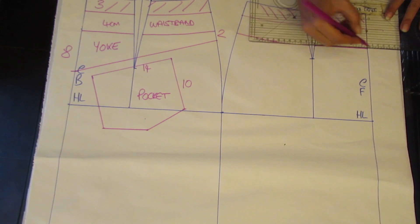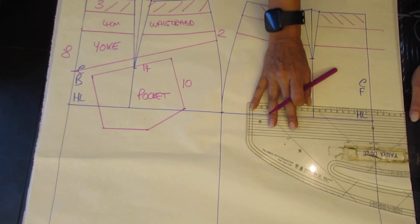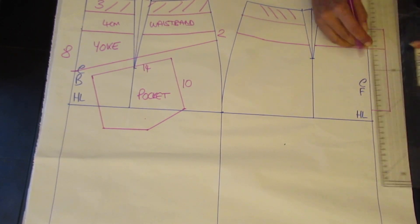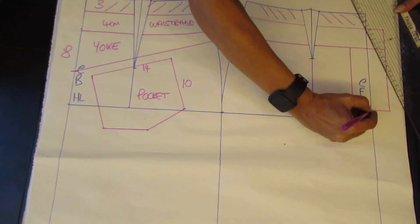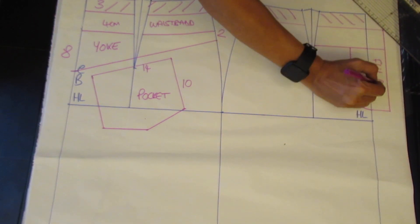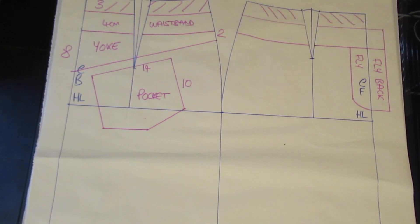Extend the waistband out by 3cm at the centre front edge for the waistband. And connect down to the zip notch 2cm above, this is for the fly back and the fly front closure.